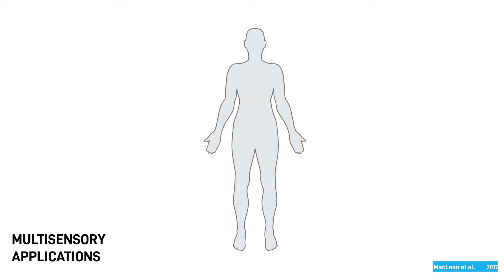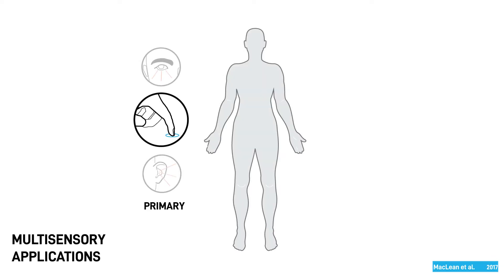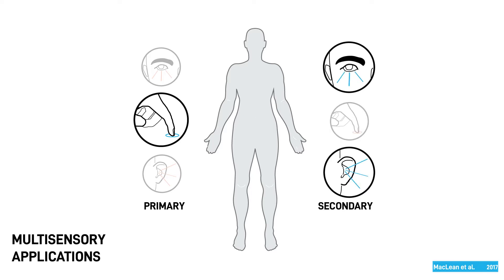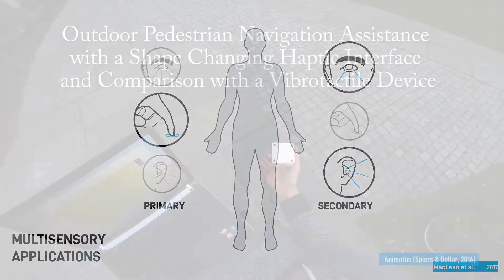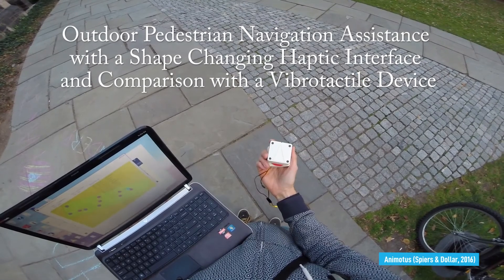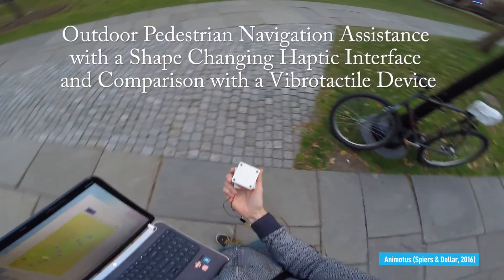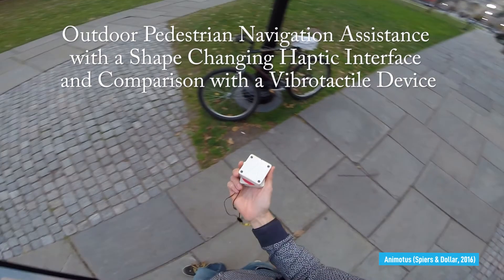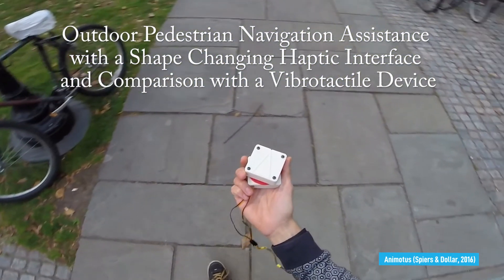For number two, haptic sensations may be the primary information source without which the user may be lost or the task may be very challenging. In contrast, as a secondary modality, haptics may improve execution of a task that mainly relies on visual or auditory information. In previous examples, the user relies on all senses to perform the interactions and tactile information does not stand alone.